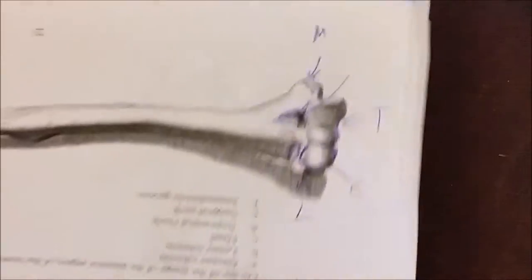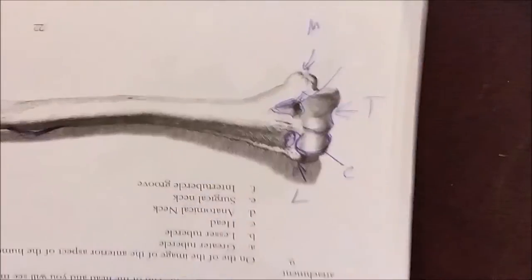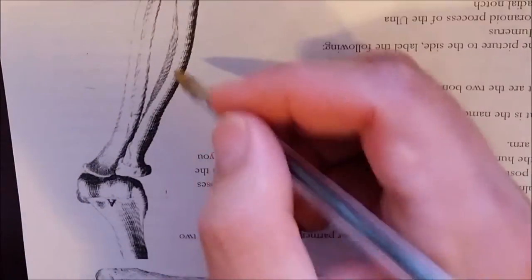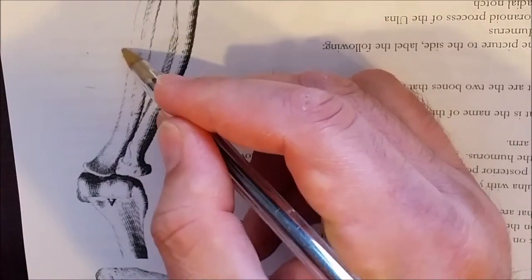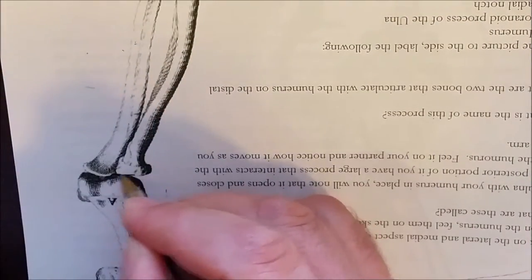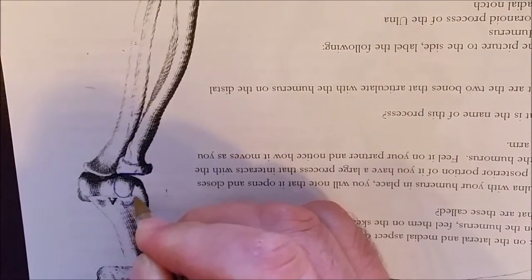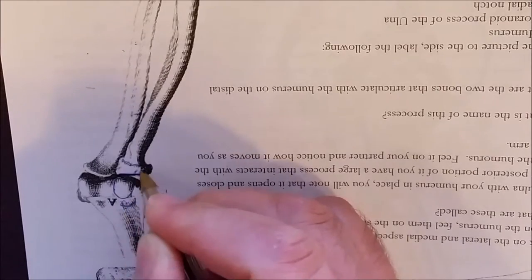The reason those fossae are important is this: when we look at the elbow joint, this bone here is the radius, and this is the ulna. The radial head is flat and round, and it fits on the capitulum — that fossa is called the radial fossa because the radius fits into it. On the ulna, there is a little projection called the coronoid process, which fits into the coronoid fossa.